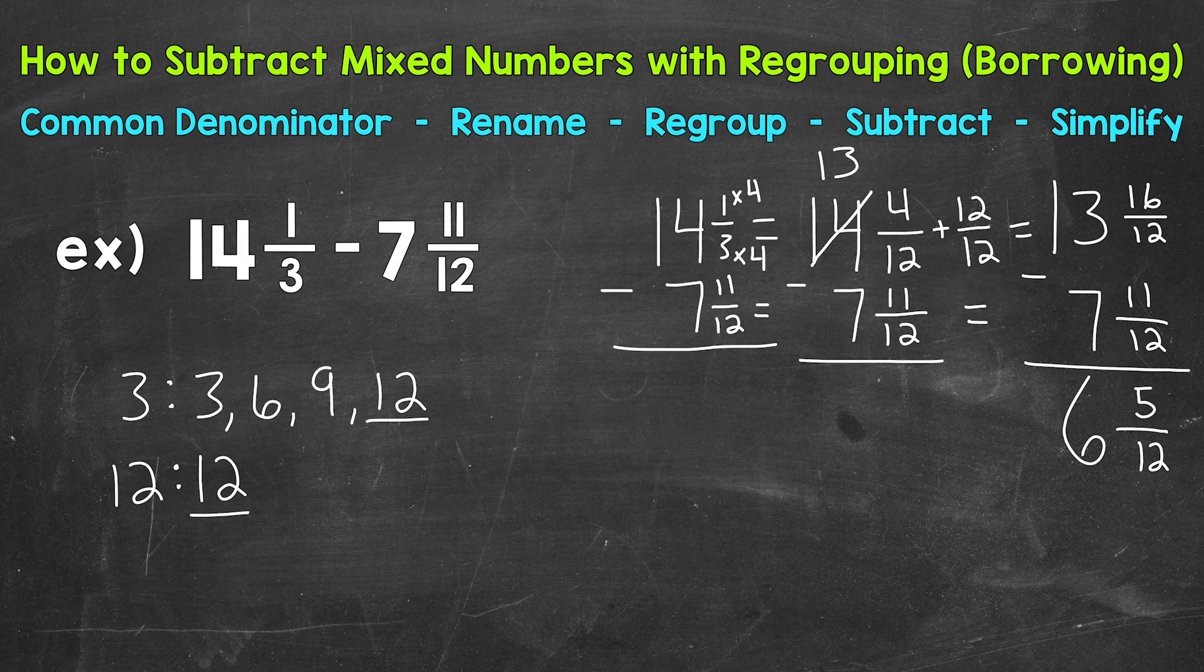Always look to see if you can simplify the fractional part of a mixed number. 5/12 is in simplest form. The only common factor between 5 and 12 is 1. So we are done. Our final answer, 6 and 5/12.